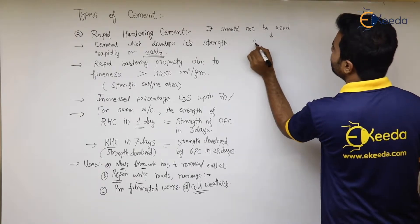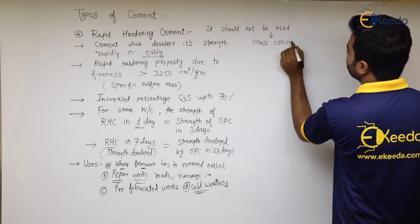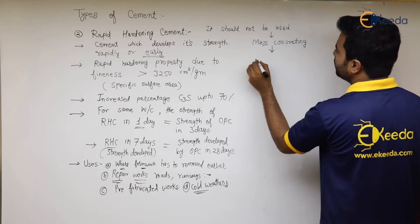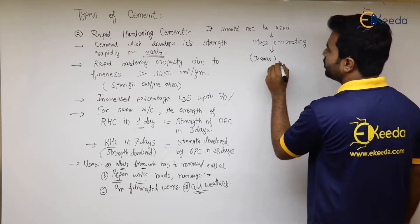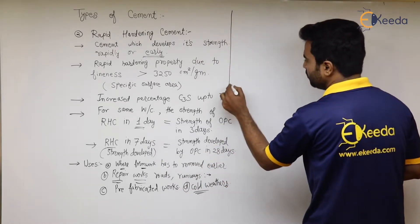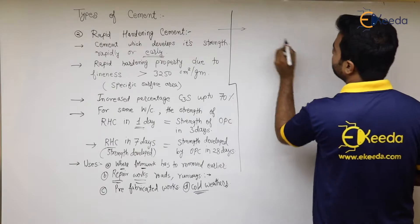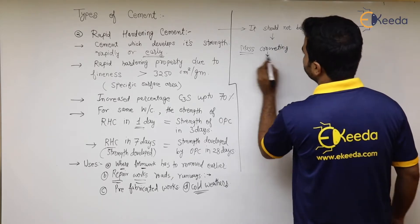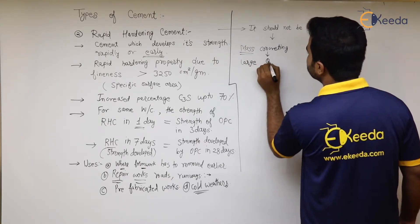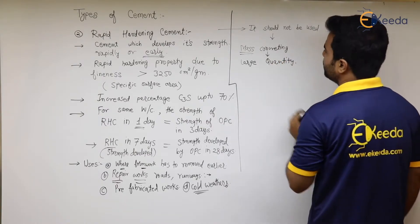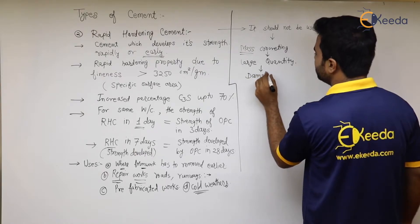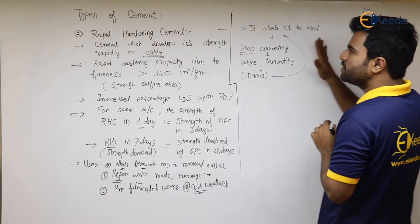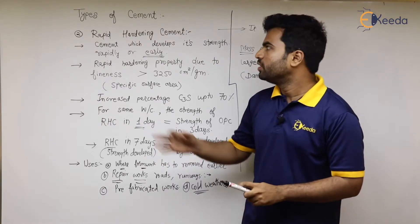Rapid hardening cement should not be used in mass concreting works where a large amount of cement is required, for example in the construction of dams. Mass concreting refers to construction where cement is required in very large quantities, and at these locations this cement should be avoided.